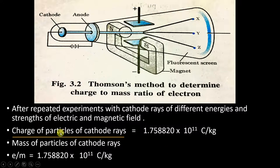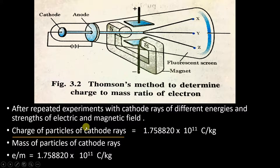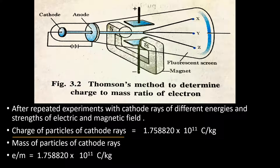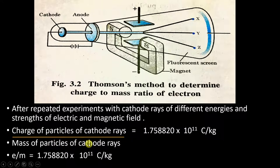Since the particles of cathode rays are now named electrons, we can say that the charge of electrons divided by the mass of electrons equals 1.75 × 10¹¹ coulombs per kilogram. The unit 'coulombs per kg' means: for 1 kg mass of electrons, the charge is 1.75 × 10¹¹ coulombs, where coulombs is the unit of charge.